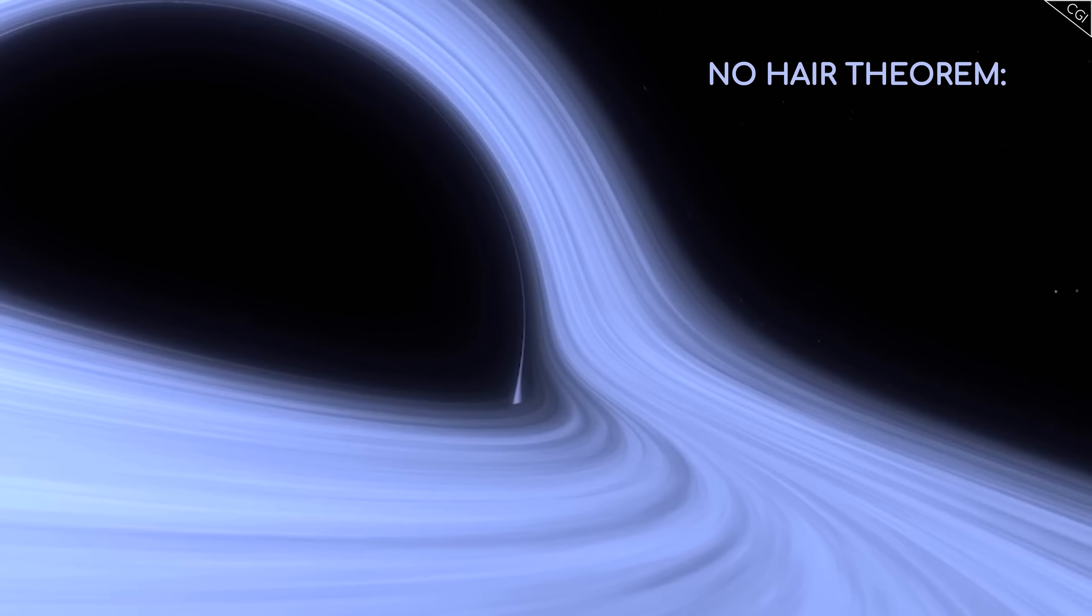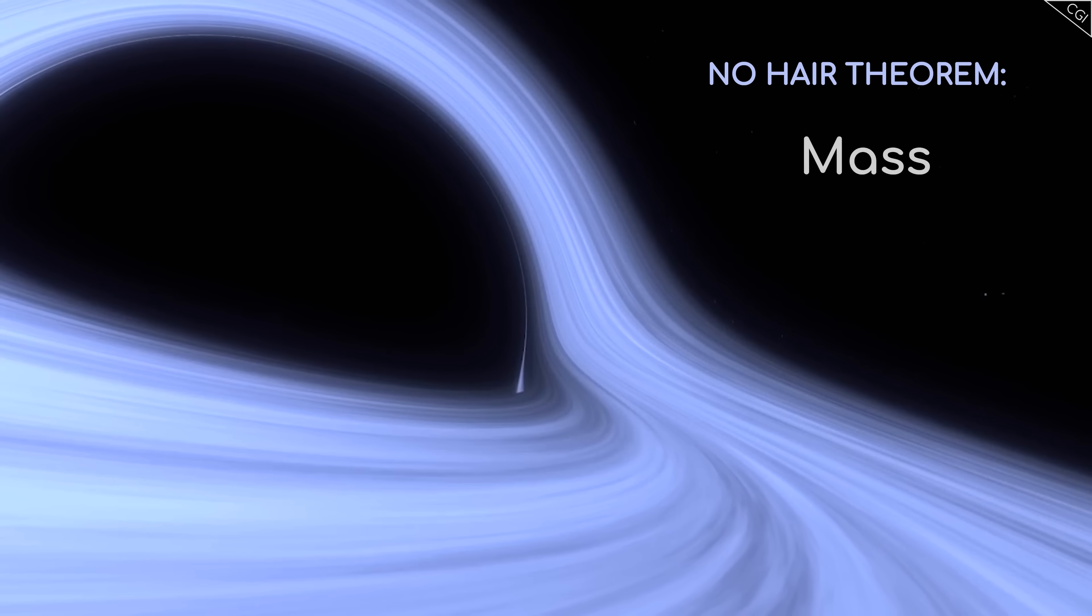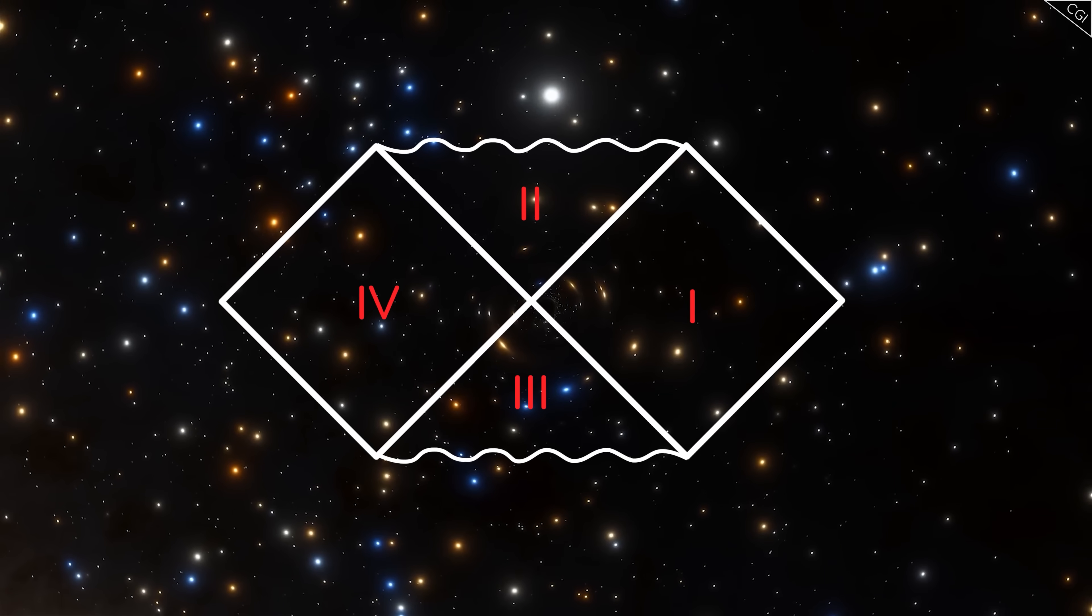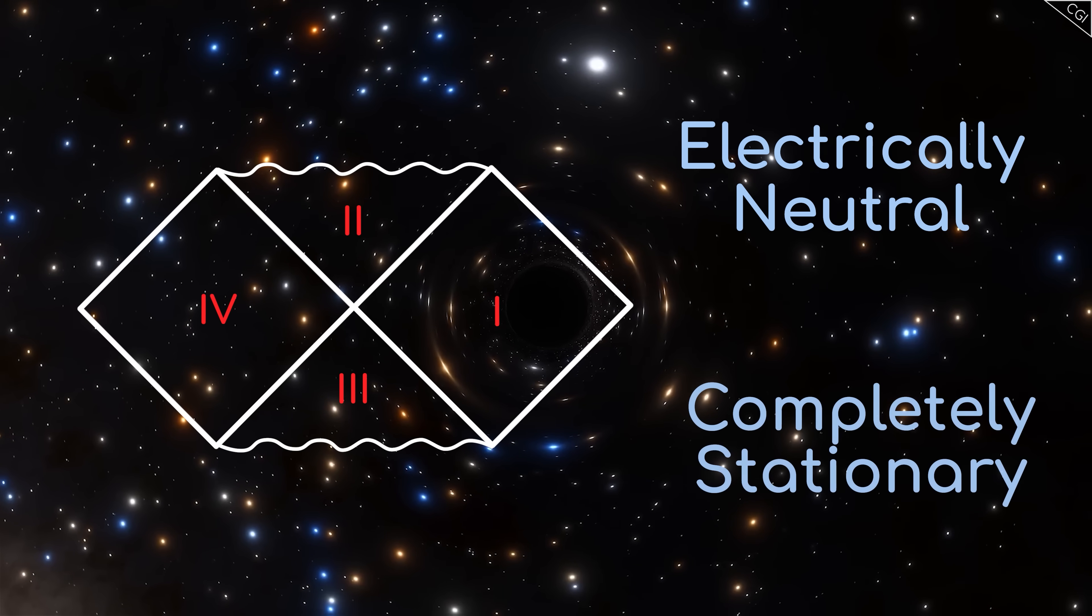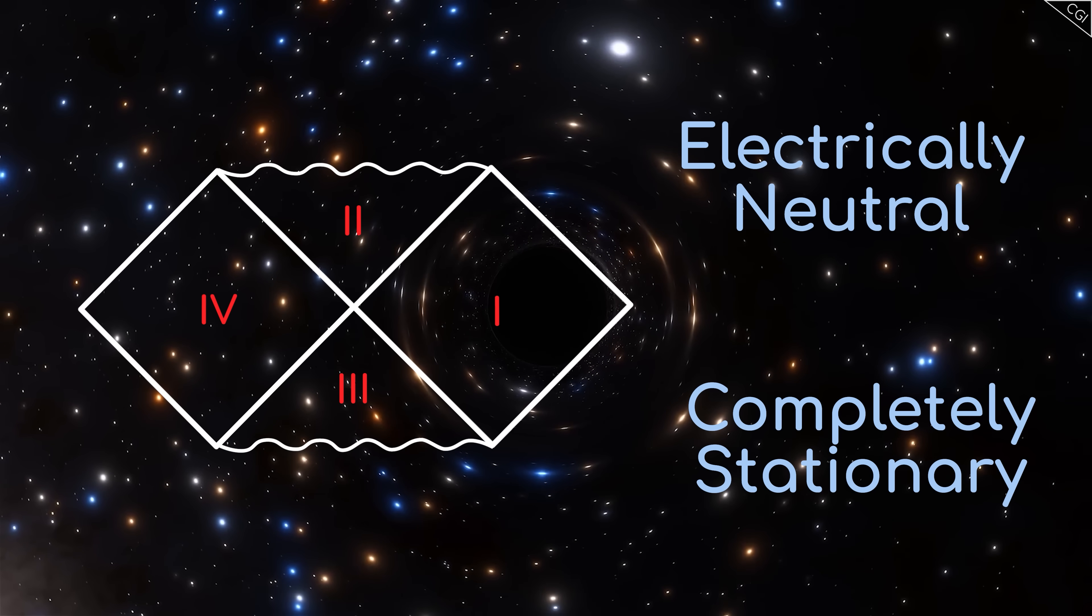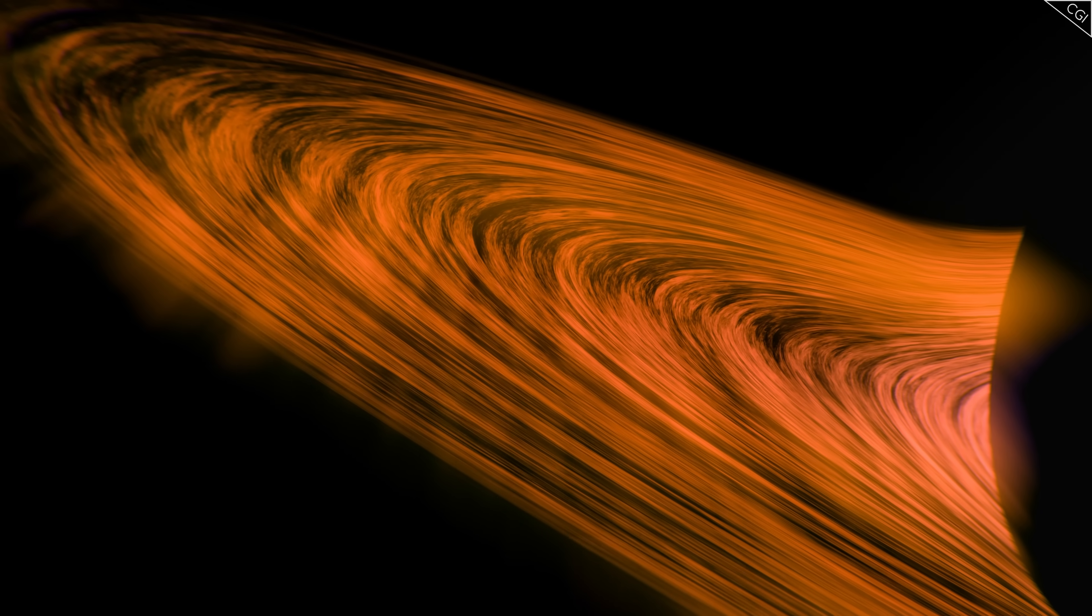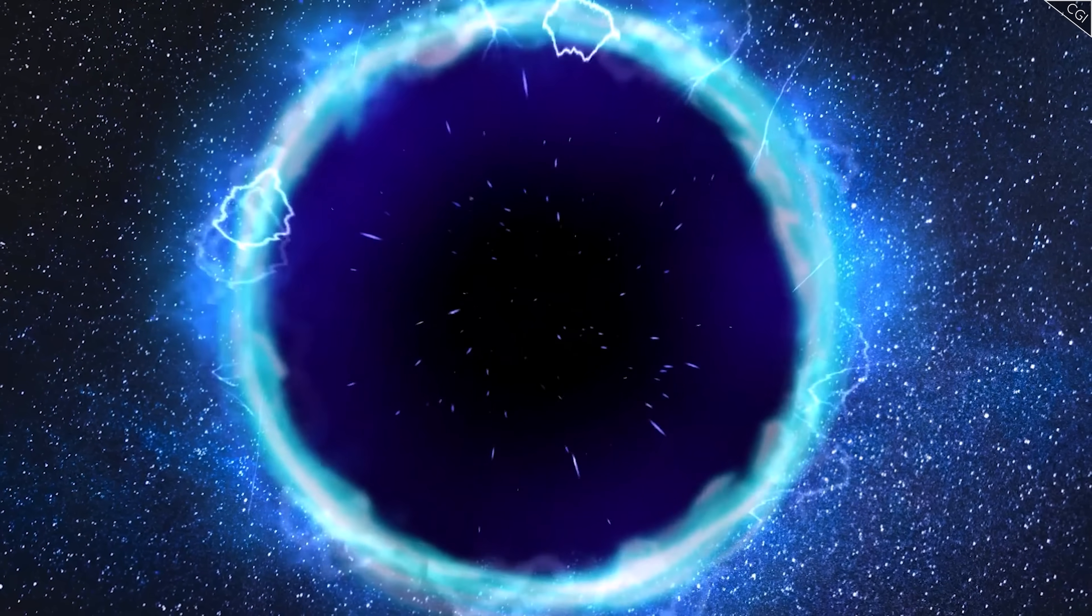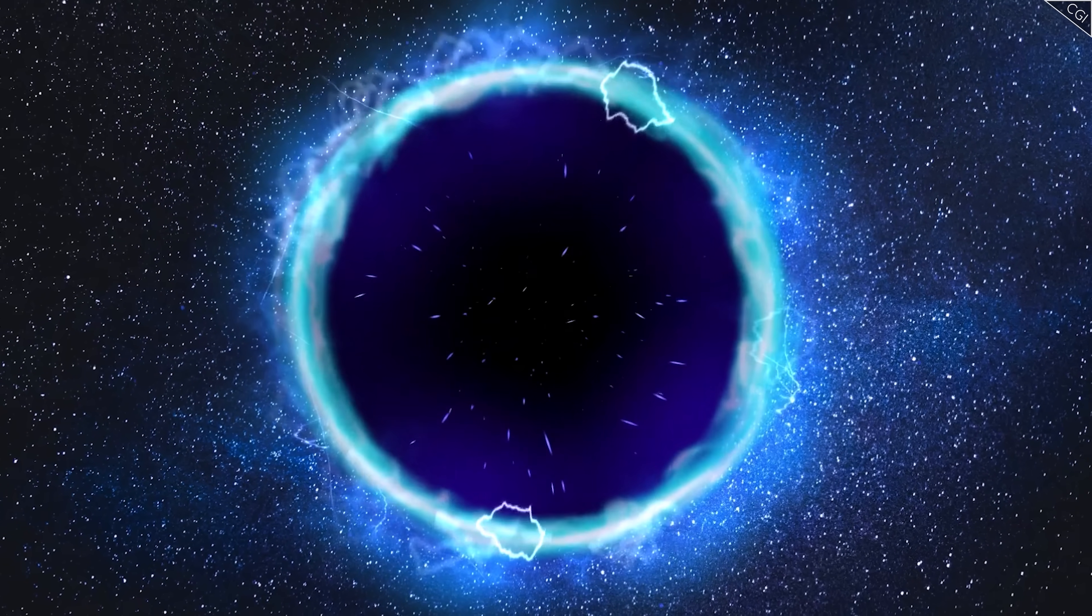The No-hair theorem says that a black hole can have up to three intrinsic properties: mass, charge and spin. But the Penrose diagram I showed you only described the simplest kind of black hole, which was electrically neutral and completely stationary. The diagrams for charged or spinning black holes are much more complicated, but they're also much more exciting, because they completely alter our understanding of singularities, and they give rise to new and fascinating regions of space-time.